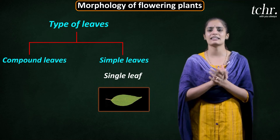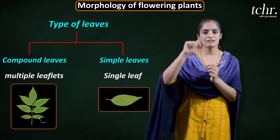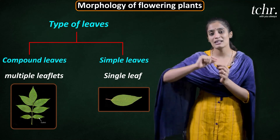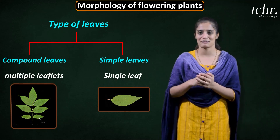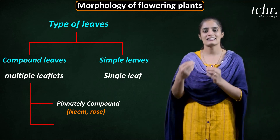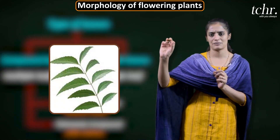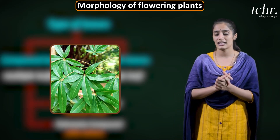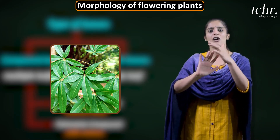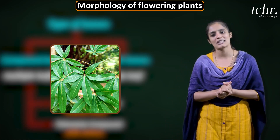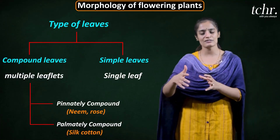Compound leaves are those where the leaf margin reaches the middle axis, forming multiple leaflets. There are two types: pinnately compound, where leaflets are arranged in a linear manner along an elongated stalk-like structure (rachis), and palmately compound, where all leaflets share a common attachment point — like fingers attached to a palm.